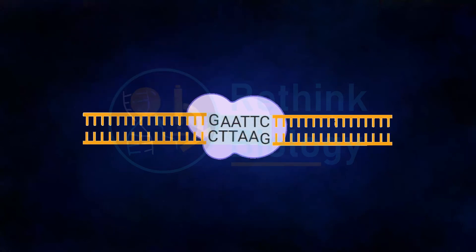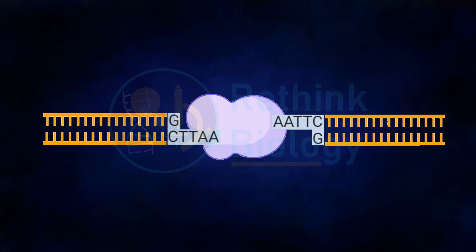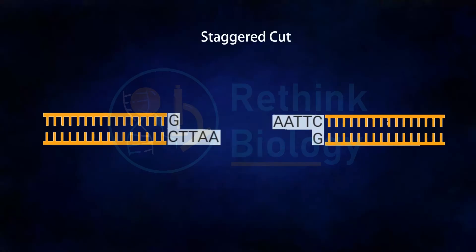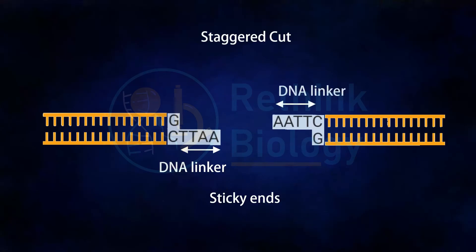By cleaving, the restriction endonucleases cut both strands of DNA. Since the same recognition sequence is present on both strands, it produces a staggered cut, generating DNA fragments each with single-stranded complementary linkers at either end. As a result, a single-stranded DNA fragment is formed on each end which is a few nucleotides long — these are called single-stranded DNA linkers.